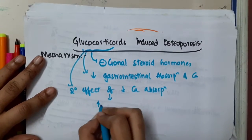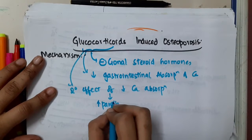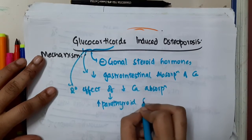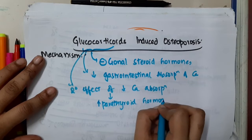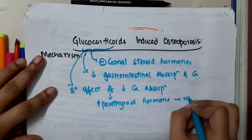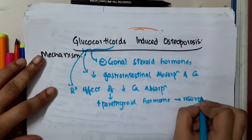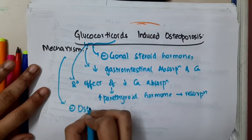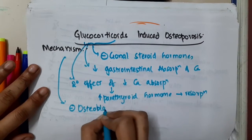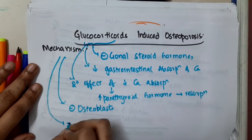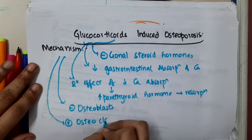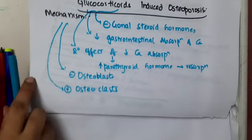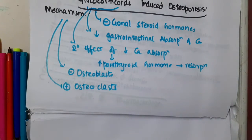Because of decreased calcium absorption, it will increase parathyroid hormone, further leading to bone resorption. Additionally, Glucocorticoids suppress osteoblasts and stimulate osteoclasts. So this is about Glucocorticoid-induced osteoporosis.